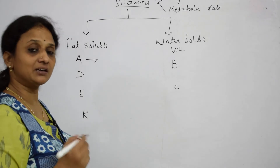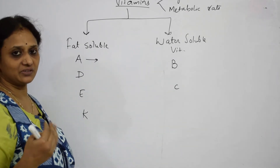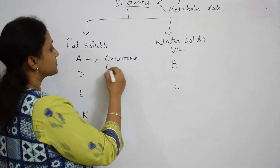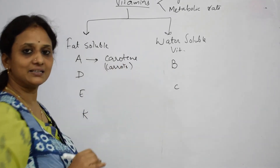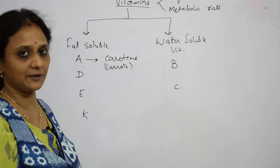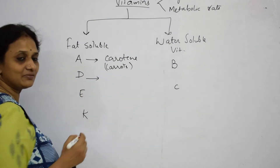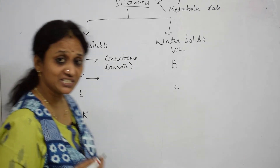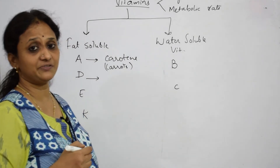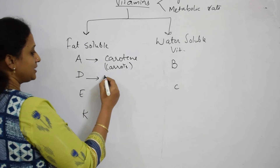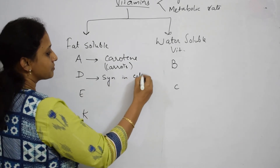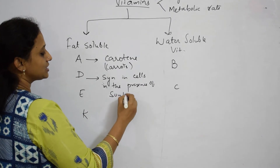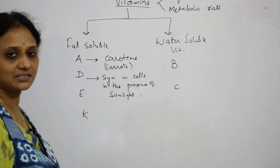Looking at fat-soluble vitamins in detail: the precursor of vitamin A is carotene, a provitamin. We can get vitamin A from carotene, which is present in carrots and green leafy vegetables. For vitamin D, it is synthesized in body cells in the presence of sunlight.